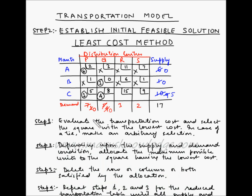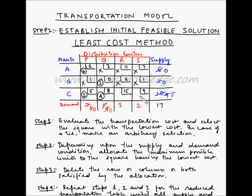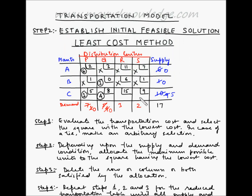Now we evaluate the transportation cost and the lowest cost square is CS. S has a demand of 2 units and C has a supply of 5 units, so we can allocate 2 units here. With this allocation, the supply at C reduces by 2 units, so now it is 3, and the demand at S also reduces by 2 units, so the remaining demand is 0. We already have either crossed off the boxes or allocated for distribution center S.